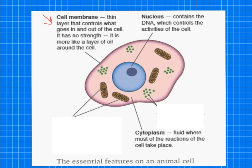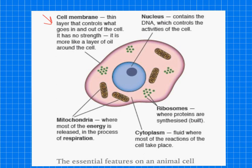Most animal cells have a nucleus which contains the DNA and it controls the activity of the cells. The cytoplasm, this is a fluid where most of the reactions take place in the cell. The ribosomes, this is probably new to you in GCSE and this shows where proteins are synthesized. Synthesized means to build or to produce. And finally, the mitochondria. This is where most of the energy is released in the process of respiration.